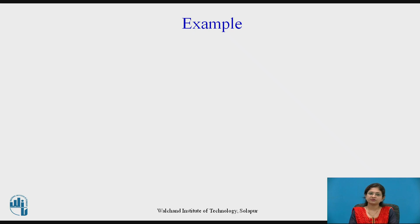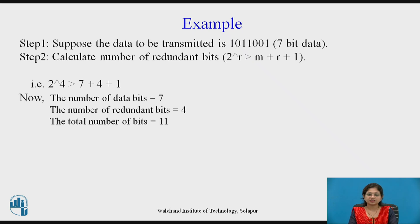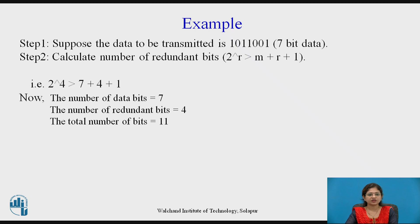Let me explain with an example. In step 1, suppose the data to be transmitted is 1011001, which is a 7-bit data. Calculate the number of redundant bits using the formula 2 raised to power r greater than m plus r plus 1. Here m is 7 and r is 4, so the total number of bits equals 11, and 11 is less than 2 raised to power 4, which is 16.